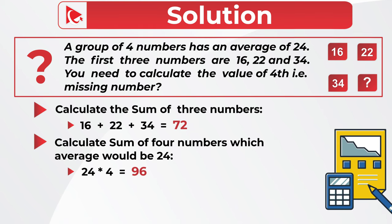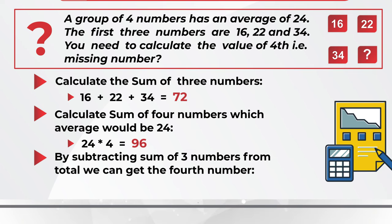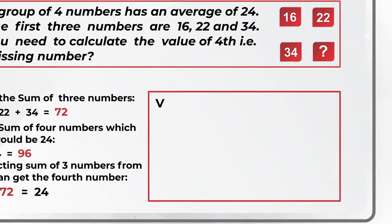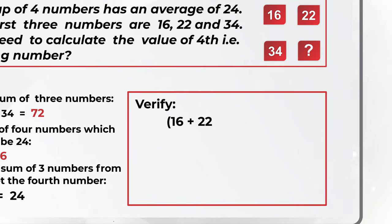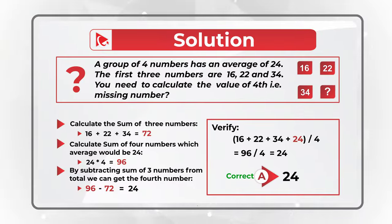In the last step, we subtract the sum of the three numbers from the total: 96 minus 72 equals 24. Let's verify: 16 plus 22 plus 34 plus the missing number 24, divided by 4, equals 96 divided by 4, which equals 24. Hope we've nailed this question and now know how to answer similar problems on the test.